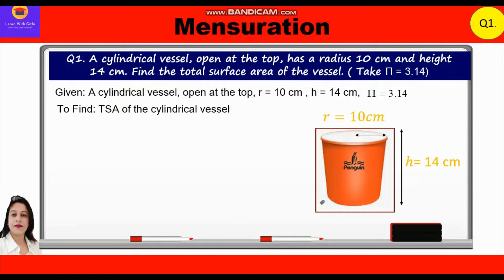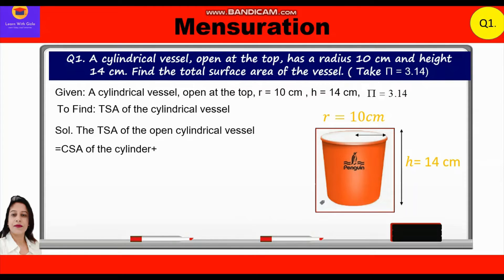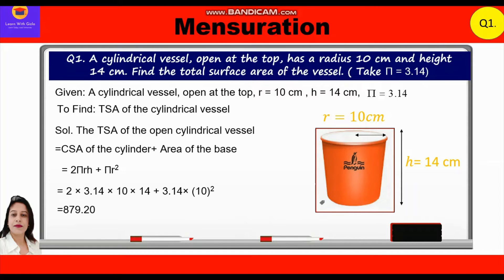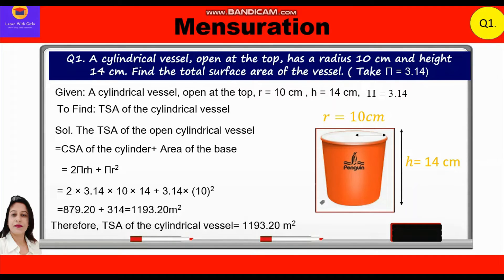The total surface area of the open cylindrical vessel equals curved surface area plus the area of the base. We shall not take the area of the top as it is open. The formula is 2πrh + πr². Substituting: 2 × 3.14 × 10 × 14 + 3.14 × 10² = 879.20 + 314 = 1193.20 cm². Therefore, the total surface area is 1193.20 cm².